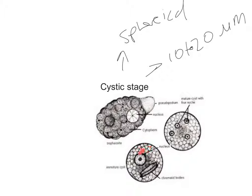The early cyst contains a single nucleus, a mass of glycogen, and one to four chromatoid bodies or chromatidal bars. In the mature cyst, the glycogen mass and chromatidal bars disappear, and the nucleus undergoes two successive mitotic divisions to form two and then four nuclei. The mature cyst is always quadrinucleate.